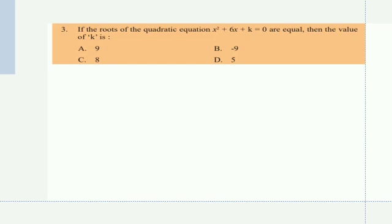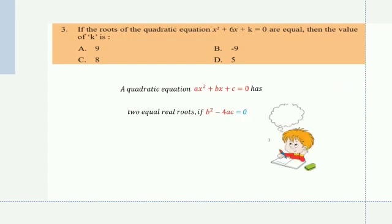Third question: If the roots of the quadratic equation x² + 6x + k = 0 are equal, find the value of k. We have to think about the discriminant. If the roots are equal, then b²−4ac = 0. So 6²−4k = 0, which gives 4k = 36, therefore k = 9. The answer is 9.